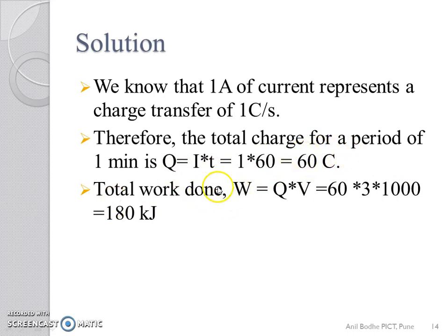Total work done W is given by Q times V. Q is 60 Coulombs, V is 3000 volts.